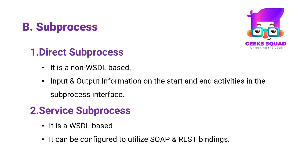A direct sub process is non-WSDL based. This means you do not need to use a WSDL to define the sub process details. Instead, you can just set up input and output information on the start and end activities in the sub process interface. Basically, you have to create a schema — there will be an XSD that will have the schemas of the start and end activities.